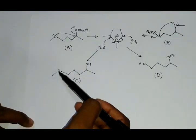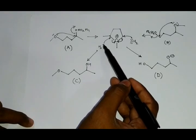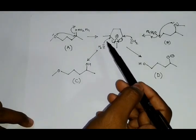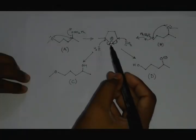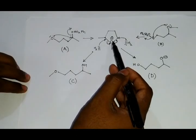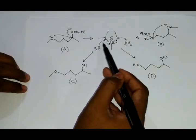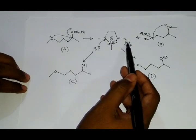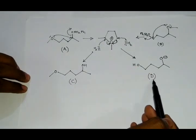Product C is obtained when the water molecule is attacking from the other side. Since the intermediate is the same and water molecule can attack from either side, product C and product D can be obtained in equal amounts.